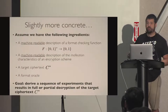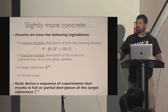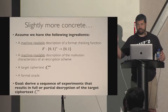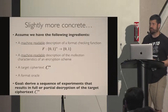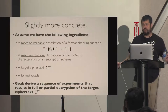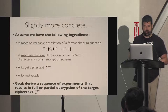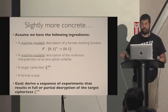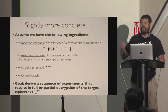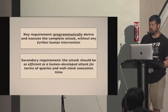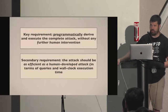What does that mean more concretely? Assume we have the following ingredients: a machine-readable description of a format checking function — maybe in Python — and a machine-readable description of the malleability characteristics of the symmetric encryption scheme we're working with. By malleability characteristics I mean knowing that when I flip certain bits, this is going to happen after decryption. We also need a target ciphertext C* that we want to attack, and of course a format oracle. The goal is, using that information with no further human interaction, derive an adaptive chosen ciphertext attack that will recover as much information about the decryption of C* in as few queries as possible.